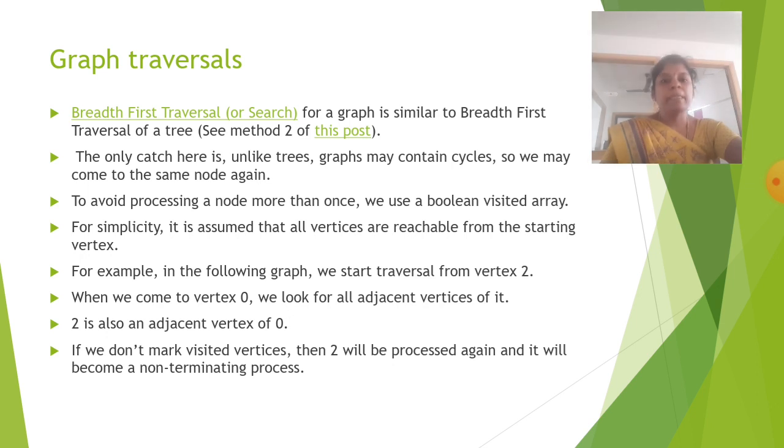For simplicity, it is assumed that all vertices are reachable from the starting vertex. For example, in the following graph, we start traversal from vertex 2. When we come to vertex 0, we look for all adjacent vertices of it.